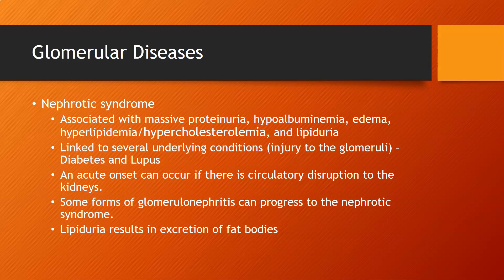Nephrotic syndrome is associated with massive proteinuria and hypoalbuminemia — lots of protein is being dumped into the urine, so you're missing protein in the blood. The main protein in the blood is albumin, so you'll see low albumin levels. You'll also see edema, because with low albumin, fluid escapes the cardiovascular system into the tissues. Additionally, there's hyperlipidemia, hypercholesterolemia, and lipiduria. It is linked to diabetes and lupus as the two main underlying conditions.